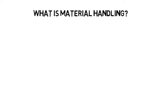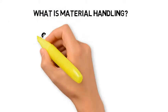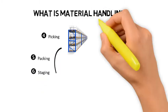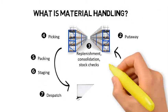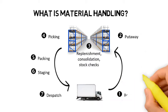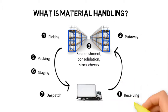A large proportion of material handling activities take place within the warehouse. When transport vehicles arrive, goods need to be unloaded and moved to an inbound staging area for checks. Once the checks are completed, the goods are put away to storage locations. In the storage area, goods are sometimes moved around as part of replenishment, consolidation and stock check activities to optimise storage efficiency and inventory accuracy.